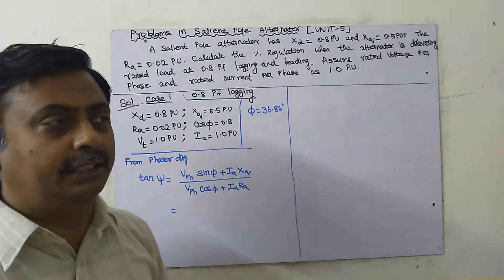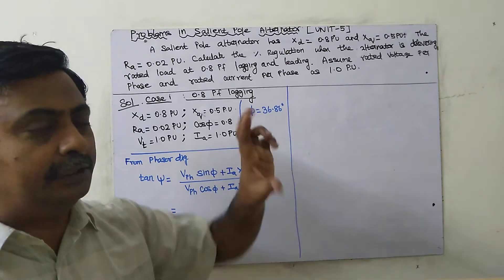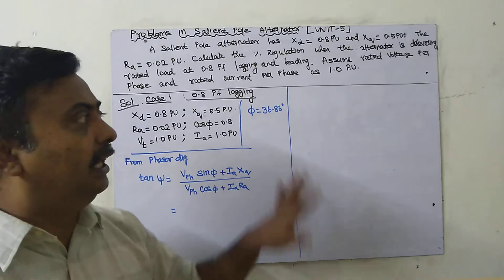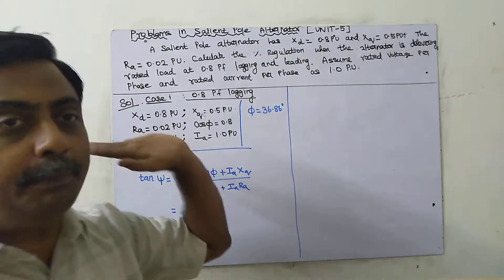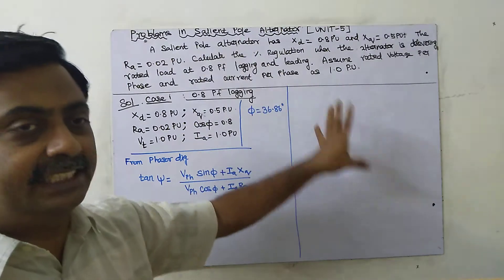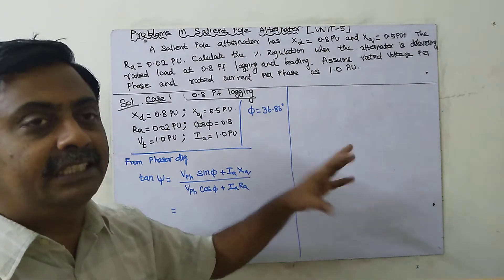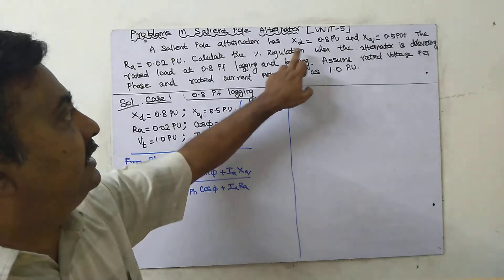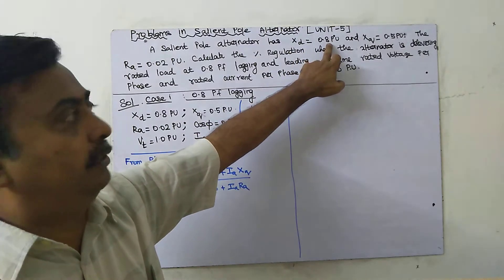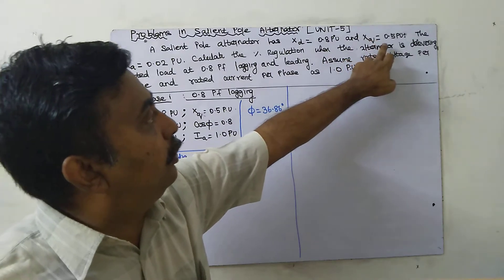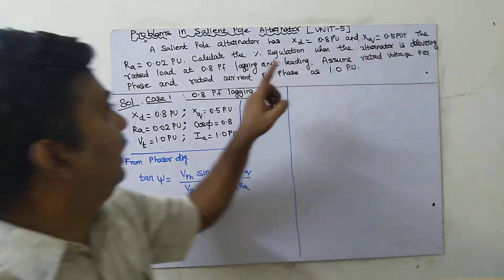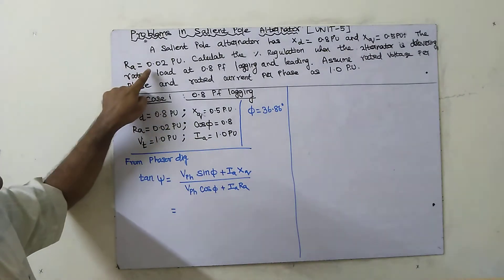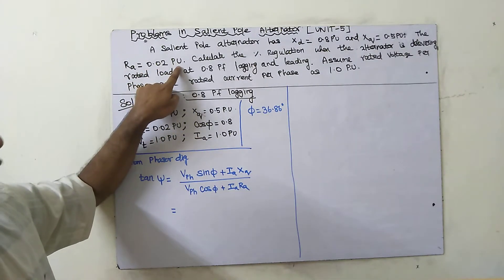The unit for resistance is ohms, reactance is ohms, voltage is volts, and current is amps. To make all units uniform, we use per unit values, which you will study in detail in power system analysis. So xd = 0.8 per unit, xq = 0.5 per unit — not in ohms, all are in per unit.